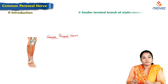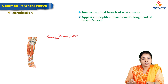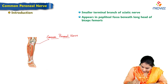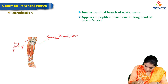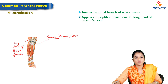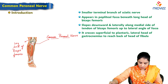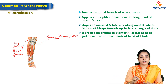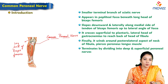The common peroneal nerve is a smaller terminal branch of the sciatic nerve. It appears in the popliteal fossa beneath the long head of biceps femoris, and slopes downwards and laterally along the medial side of the tendon of biceps femoris up to the lateral angle of the fossa. It winds around the neck of the fibula and pierces the peroneus longus muscle, terminating by dividing into superficial and deep branches.